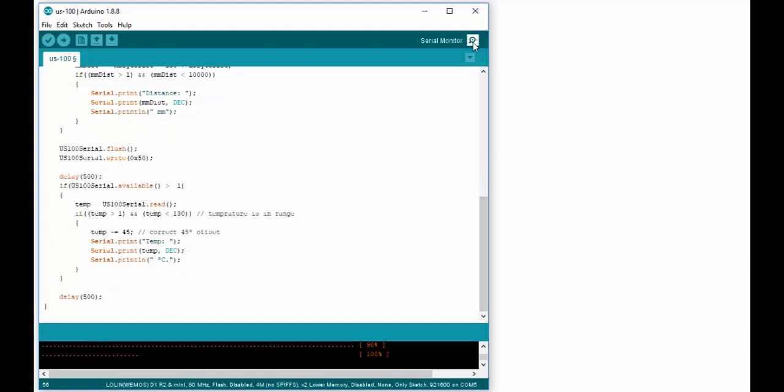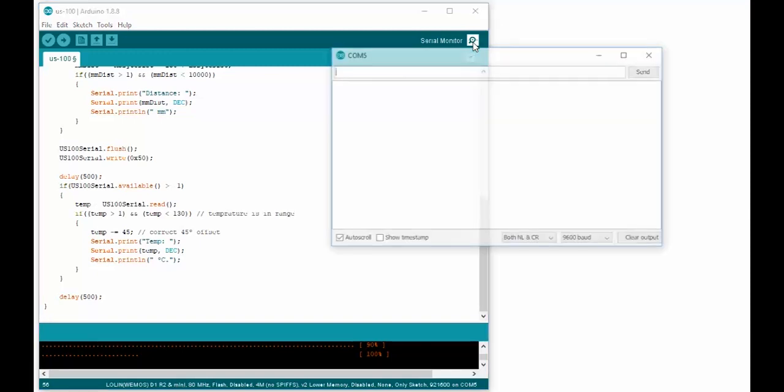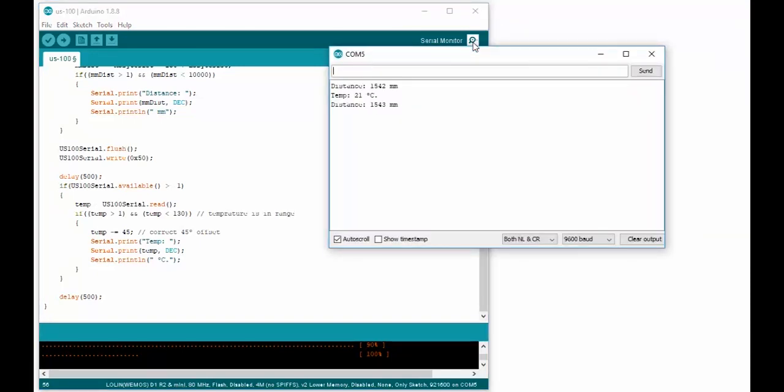Upload the code and open the serial monitor. That's how you get data from the US100 in UART mode.